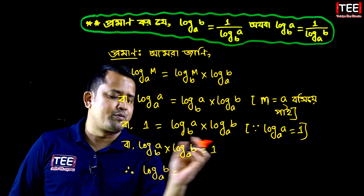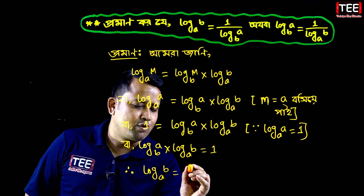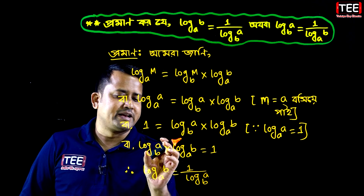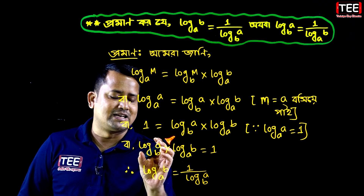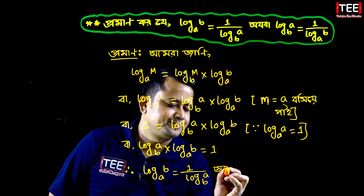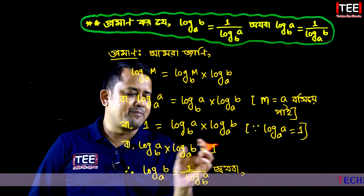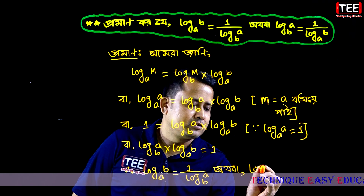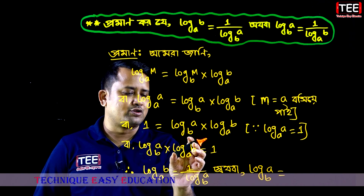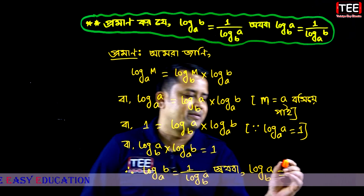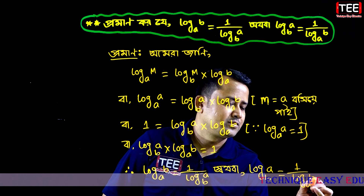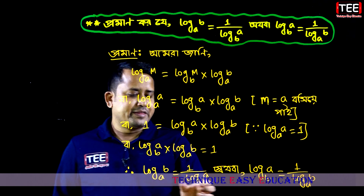So we pick up 1 by log base b of a, divided by log b. Multiplying through: log base b of a equal to — look, multiplying gives us, therefore, 1 by log base a of b. This completes the proof.